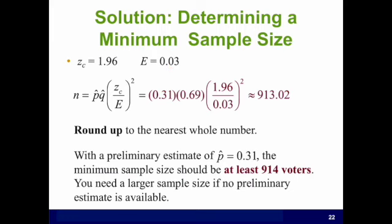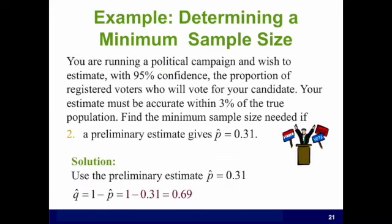The margin of error is 3% and the critical value for 95% level of confidence is 1.96. We replace those values and we get 913.2. We round up to 914.